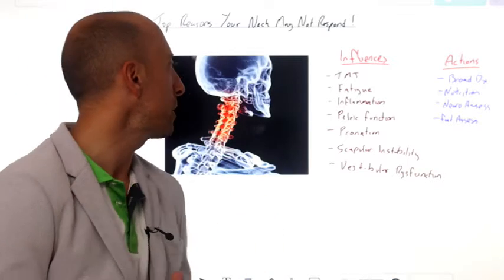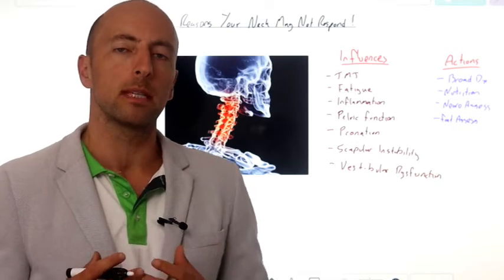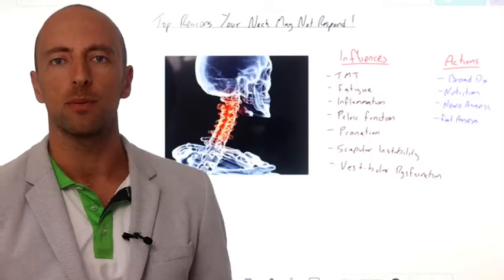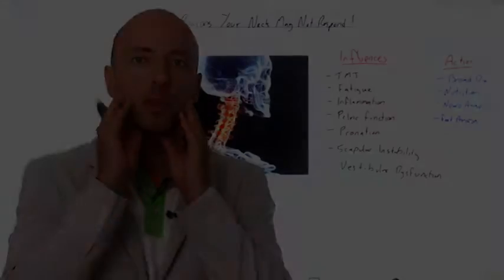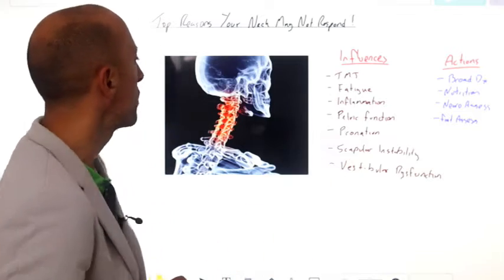Let me run through a few of those with you today. Top of the list, one of the main reasons people don't respond as well as they should in dealing with their neck pain is problems with the jaw. The main reason for that is when we look at jaw function, the mandible itself, this area here, moves in unison with the second cervical vertebrae.